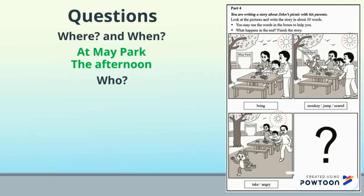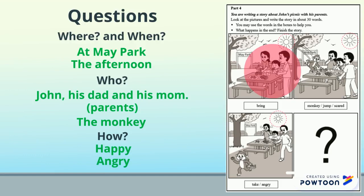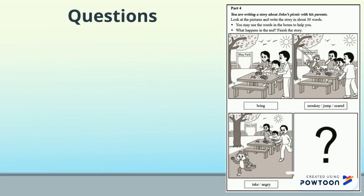Who can you see? I can see John, his dad and his mom, or his parents. Later on, the monkey comes in. How do they feel? At the beginning, they are happy. But later on, they get angry.